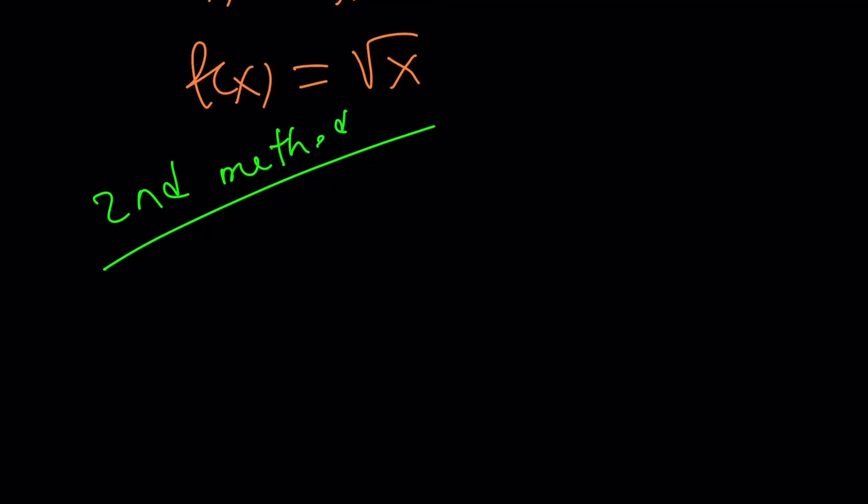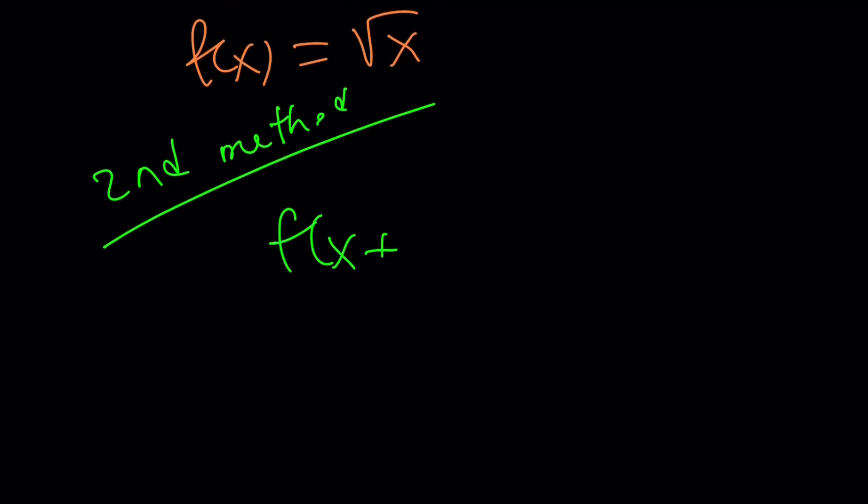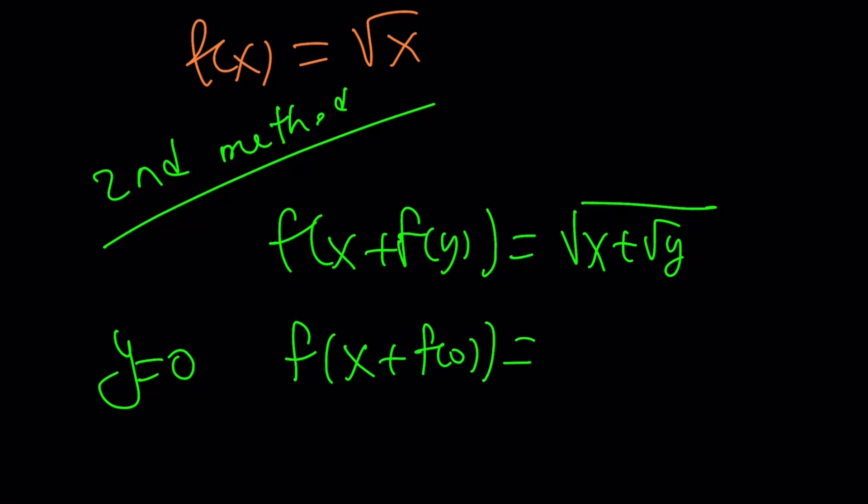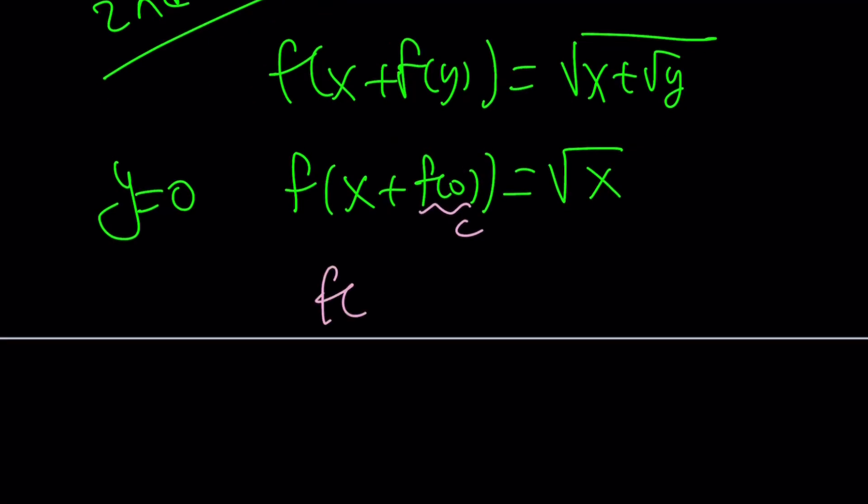Okay. My second method is basically kind of similar idea, but with a little twist. We're going to replace y with 0. And then that's going to give us f of x plus f of 0 is equal to the square root of x. See, it's slightly different. Now, what is f of 0? I don't know. Let's call it c. Now, I get f of x plus c equals square root of x. Hopefully, you see what I see. And now, we're going to do the following.